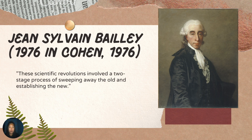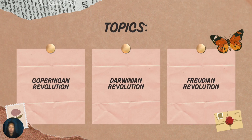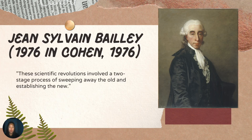These are the Copernican Revolution, the Darwinian Revolution, and the Freudian Revolution. In the words of the French astronomer, mathematician, and Freemason Jill Silver Vane Bally (1976, in Coen), these scientific revolutions involve a two-stage process of sweeping away the old and establishing the new. So there is a transformation.